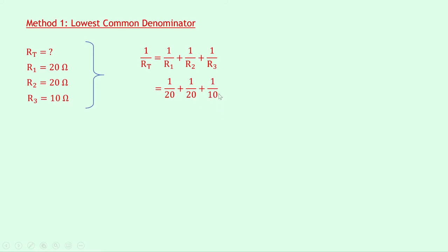So if I want 1/10 to become over 20, I need to multiply both the top and bottom of that fraction by 2. This becomes 1/20 + 1/20 + 2/20. Now because I've got all fractions with the same denominator I can add them together to get 4/20. I need to flip both sides because right now I've got 1/RT, so RT equals 20 divided by 4, which gives me 5 ohms.